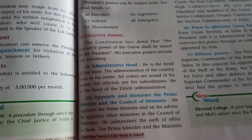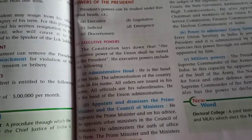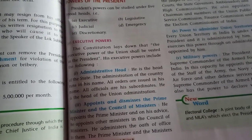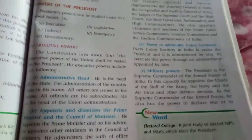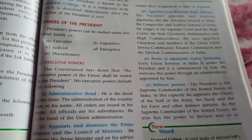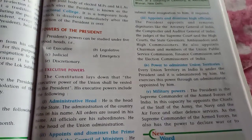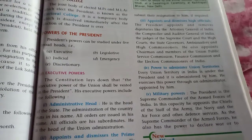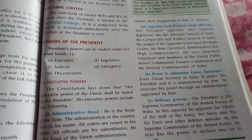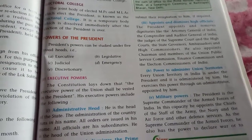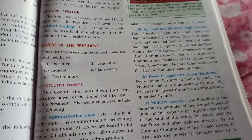He can appoint and dismiss the prime minister and council of ministers — on advice of the prime minister, he appoints the council of ministers, and he is present at the oath of office. He also appoints and removes high officials: the Attorney General of India, Controller and Auditor General of India, judges of the Supreme Court and High Courts, state governors, ambassadors, high commissioners, chairman and members of the Union Public Service Commission, Finance Commission, and Election Commissioners of India.